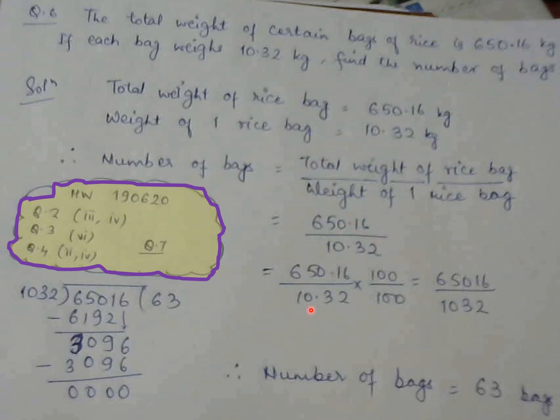So it will be 650.16 divided by 10.32. Now 10.32 I am multiplying with 100 so that it becomes a whole number. So multiplying 100 down should be followed by multiplying 100 up. So the new number will be 65016 divided by 1032. Then you will do the division. You will get the answer as 63.